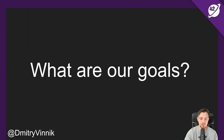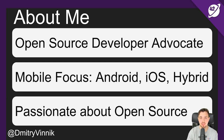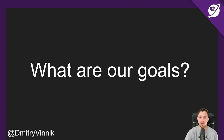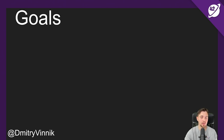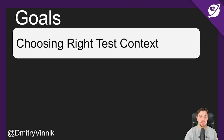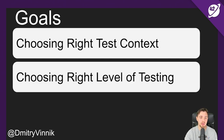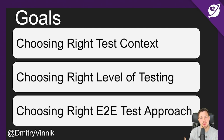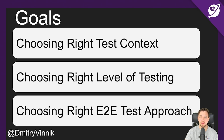I'm very passionate about open source, and today I'm talking about testing using open source technologies. Our goals for today: first, choose the right test context and know where we're working. Then choose the right level of testing — hopefully you already know the test pyramid and how to apply it to web context. Last but not least, choosing the right end-to-end test approach, taking the perspective of an end user regardless of what you're using in the backend or frontend.